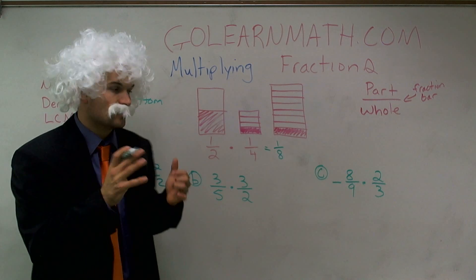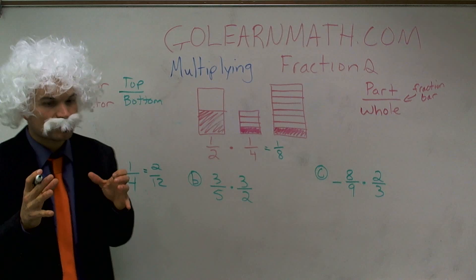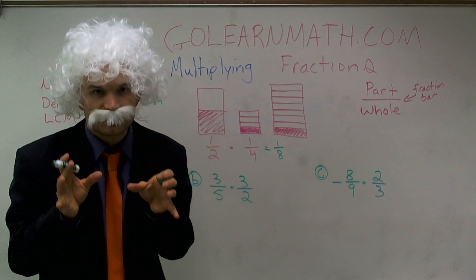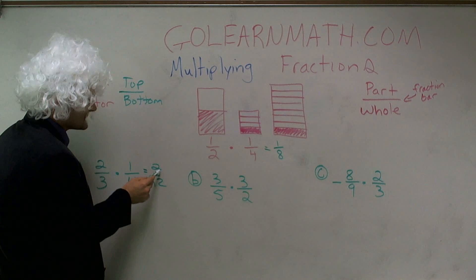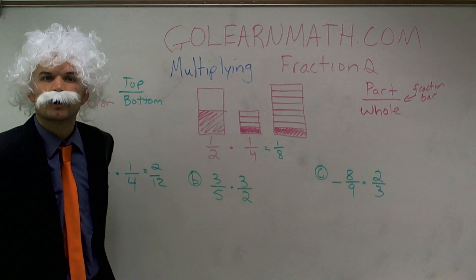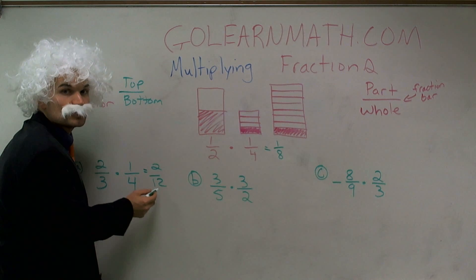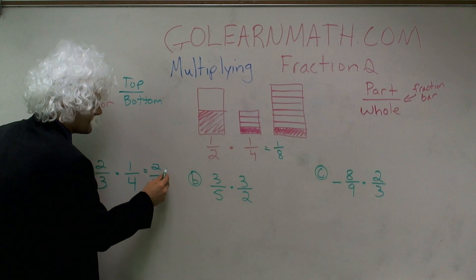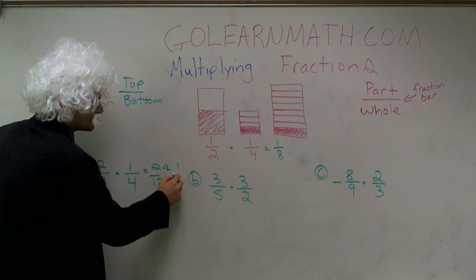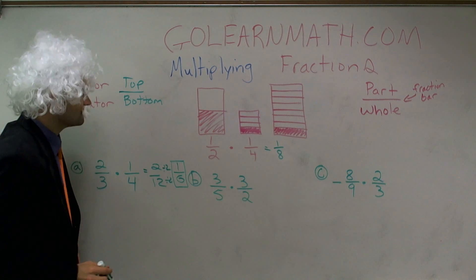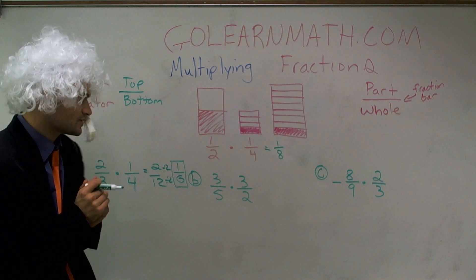Now the last important thing to remember: whenever you have a fraction like two-twelfths, it can be reduced down to a smaller fraction — what we call lowest terms. Is there a number that goes into both two and twelve? Yes, two does. Two goes into two one time, and two goes into twelve six times. So dividing top and bottom by two gives you one-sixth. Always write your fractions in lowest terms.